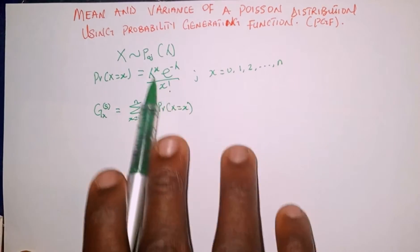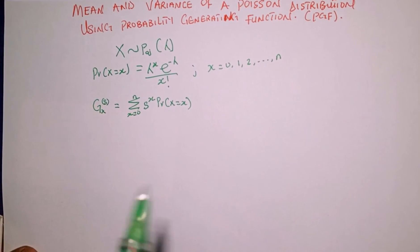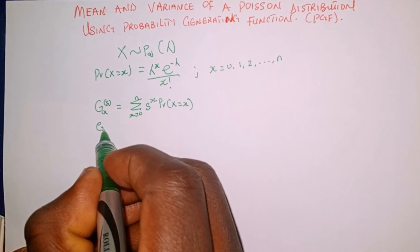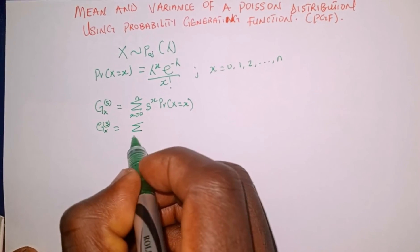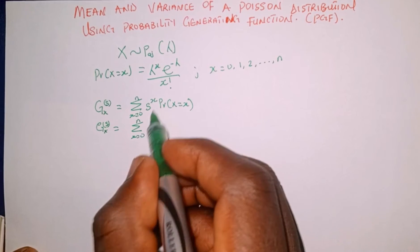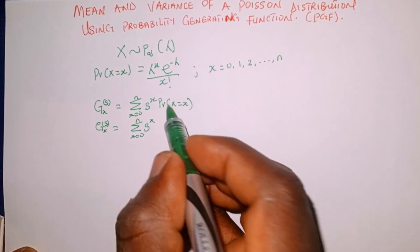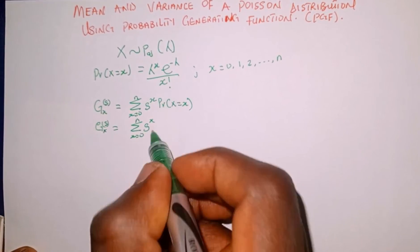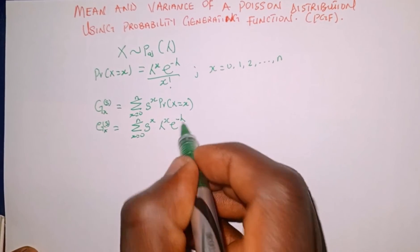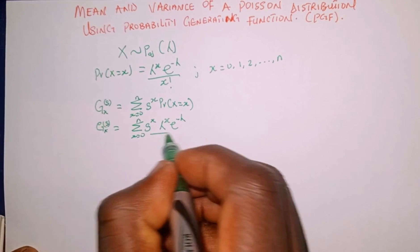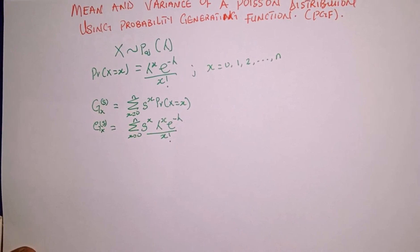Now we're going to substitute into this. So G sub X of s is equal to the summation as x raises from 0 to n of s raised to the power x, and the probability of X equal to x is the same as lambda to the power x, times e raised to the power of minus lambda, all over x factorial.